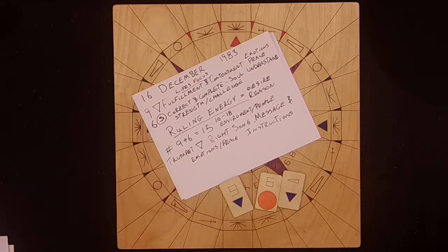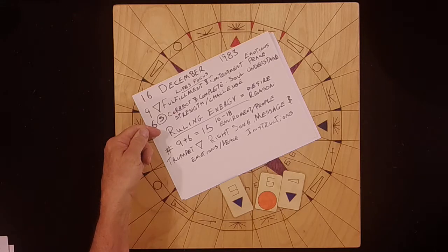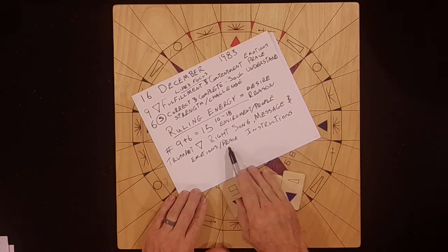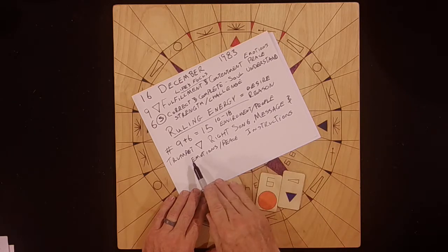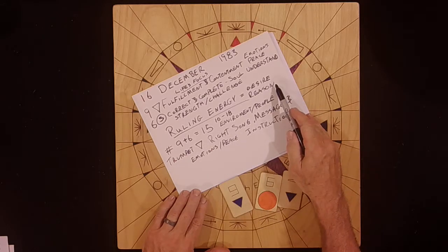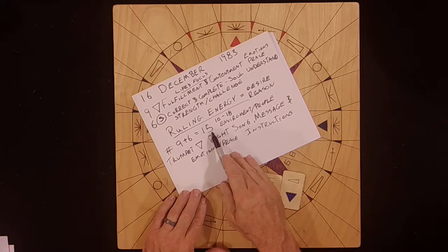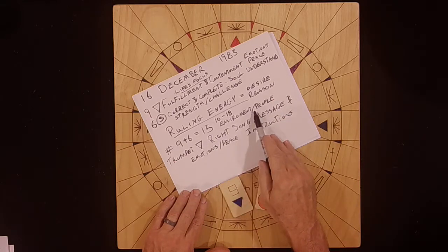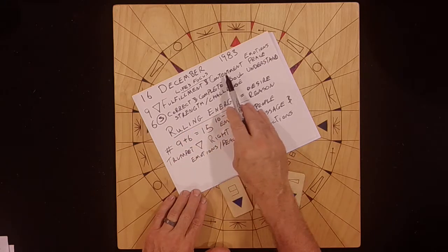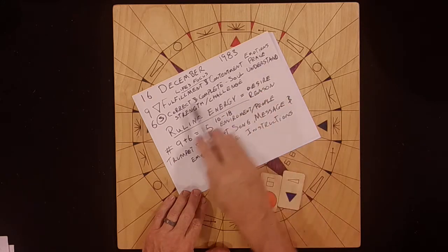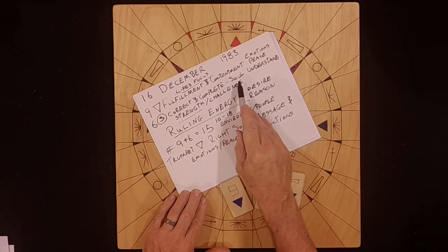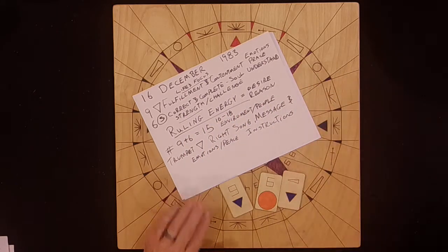And it's connected to the emotions and peace. So, how does that read? The ruling energy that's going on for this person is about putting the right song, message, and instructions out there for peace, for emotional balance. They want to do that. That's the desire and the reason they do what they do, and so that they can be correct and complete in the world around them. And what do they need to do that? They need to have fulfillment and contentment in their emotions and in peace. And the strength they need is to be correct and complete in their soul, have correct and complete understanding.